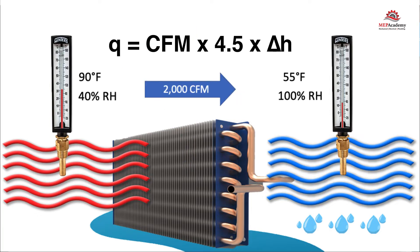Looking at the chilled water coil, we see that there is 2,000 cubic feet per minute of air flowing through this coil.